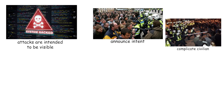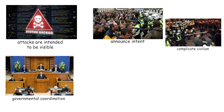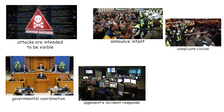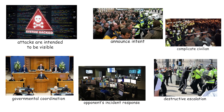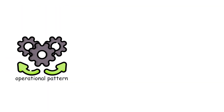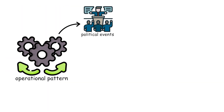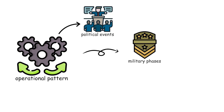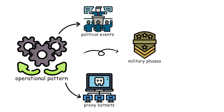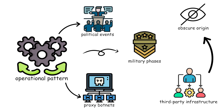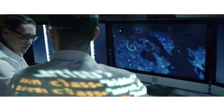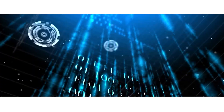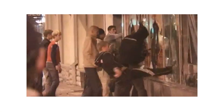These attacks are intended to be visible. They announce intent, complicate civilian and governmental coordination, and test the opponent's incident response without crossing into destructive escalation. The operational pattern is quick bursts, timed to political events or military phases, routed through proxy botnets and third-party infrastructure to obscure origin. Effects are immediate: public-facing portals and media become unreachable, emergency information flow degrades, and short-term trust in institutions erodes.